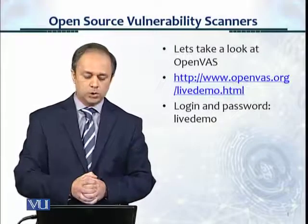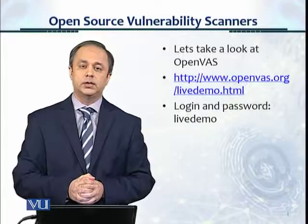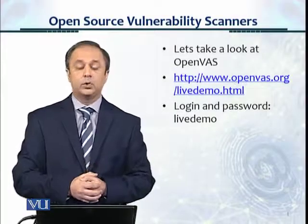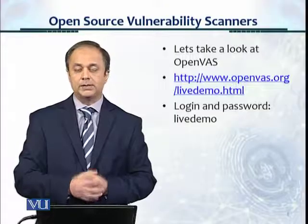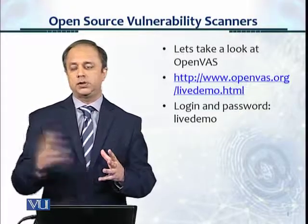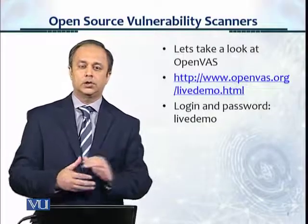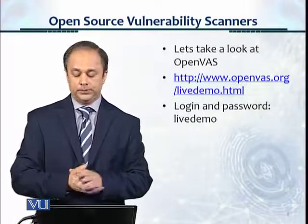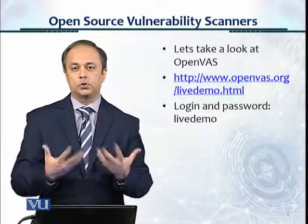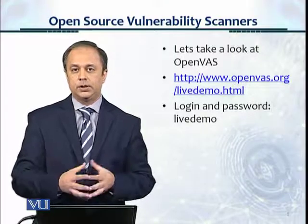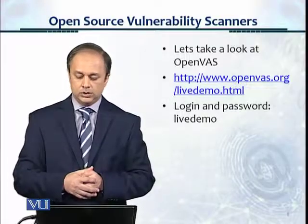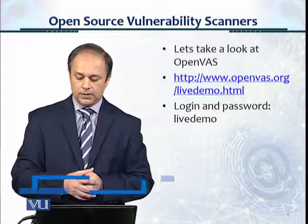Welcome to this module in which we'll talk about open source vulnerability scanners. We'll take a look at a walkthrough for one of the most famous ones, which is called OpenVAS. It's actually a fork from Nessus, and when Nessus became commercial, Greenbone Networks took on this project to make it open source. They still support it, and it uses some of the same technology as Nessus.